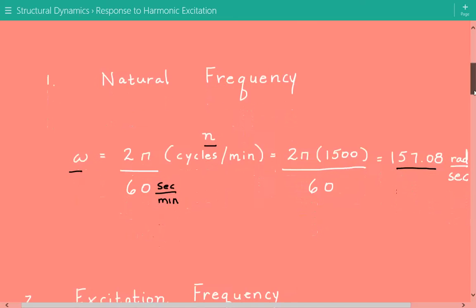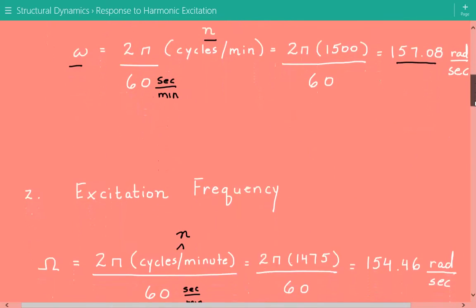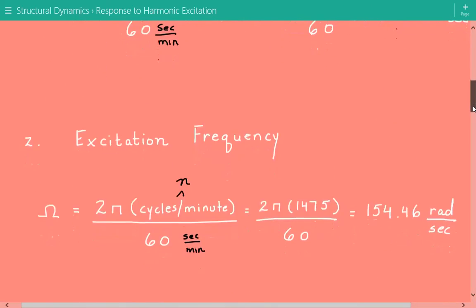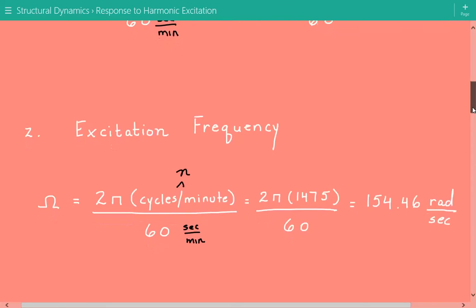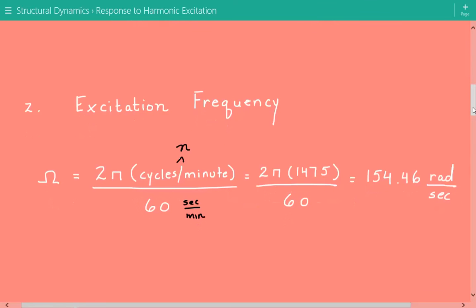The next step is to do the same thing with the excitation frequency. Convert the excitation frequency, which is the frequency of the forcing function, harmonic forcing function, from cycles per minute to radians per second. And we do the same approach. We call this capital omega equals 2π times n, the number of cycles per minute divided by 60.